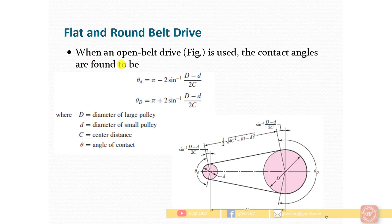Now let's discuss the angle of contact. We have contact angle in the flat belt case. Basically, we have two types of belt drives: an open belt drive or a cross belt drive. In an open belt drive, the driver and driven pulleys rotate in the same direction. Now let's find the angle of contact, also called the angle of embrace.